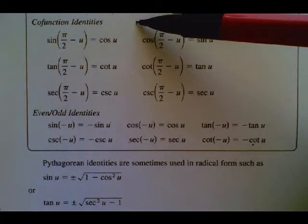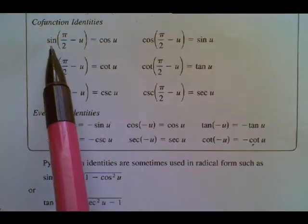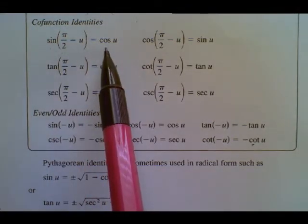There are three co-function relationships in trigonometry. Sine and cosine are co-functions of each other.